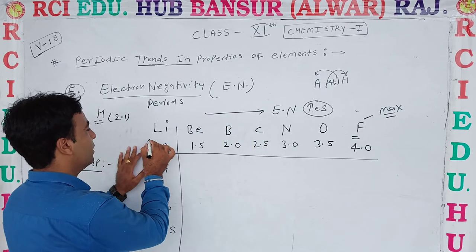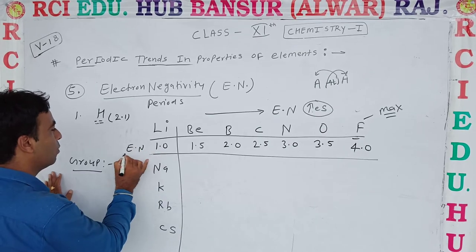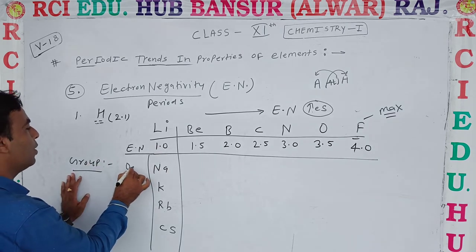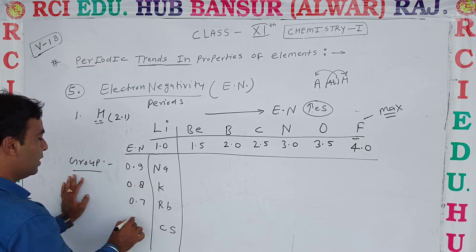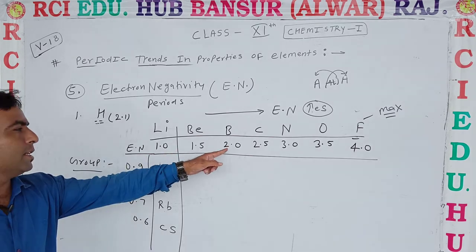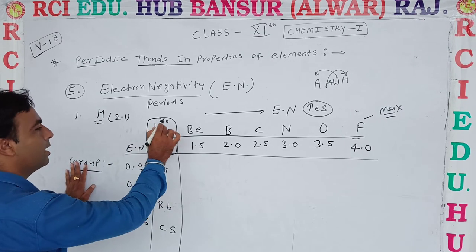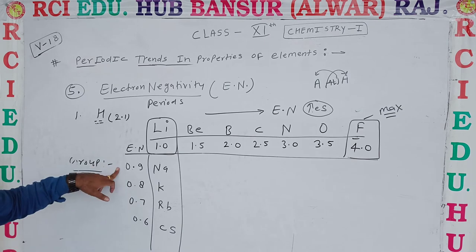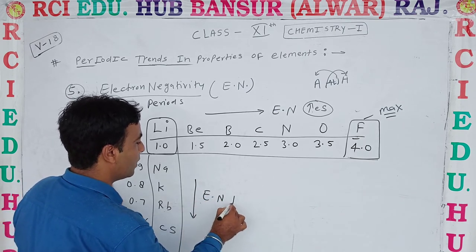Looking at the electronegativity values going down Group 1: Lithium is 1.0, then 0.9, 0.8, 0.7, decreasing by about 0.1 each step. So in the group, from top to bottom, electronegativity decreases.